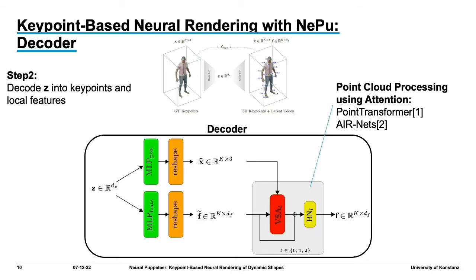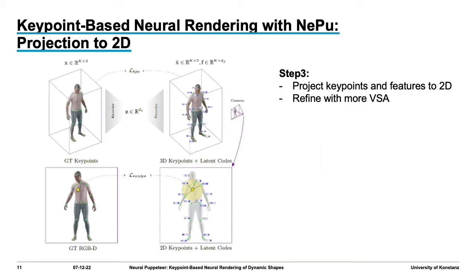Our decoder first decompresses the single latent vector into keypoints and local features in two separate branches. The purpose of the local features is to describe their surroundings locally. We then refine the features using the same attention operator as before. We incorporate camera parameters of the rendering procedure by projecting 3D keypoints into image space alongside the local features. In 2D, we facilitate a final round of attention for further refinement.